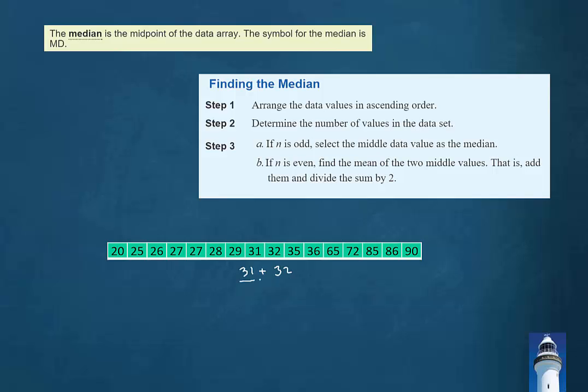So we'll add these together, divide that by two, and what we're going to find then is that the median for this data set is 31.5. And what this illustrates is that the median does not have to be a data value in the data set.